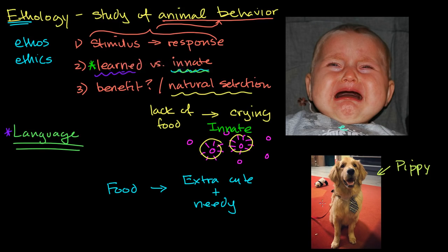But let's go back to Pippi. What's the benefit of acting cute and needy around food — why would that be selected for? Well, the wolves thousands of years ago that were better at getting close to humans and acting extra cute and needy were able to get food without having to hunt it down themselves. And that's actually how dogs came about.